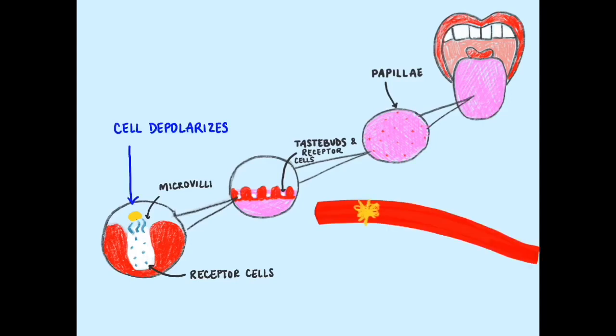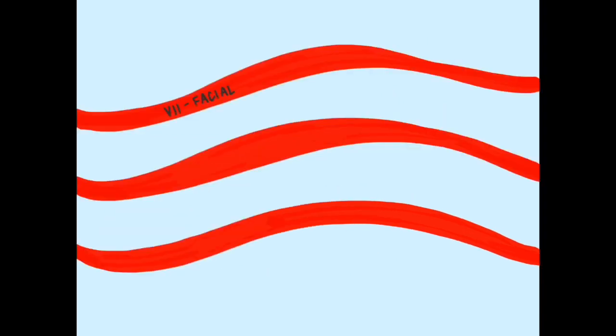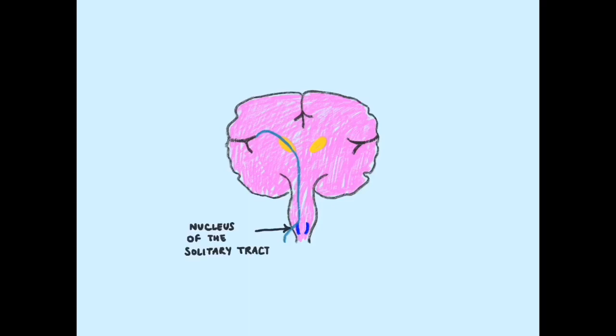Upon depolarization, the cells release neurotransmitters that activate the sensory neurons, which travel through cranial nerves 7, 9, and 10. The sensory neurons terminate on neurons of the solitary tract in the medulla. From here, the taste information is sent to the thalamus. Then, the information is transferred to the cerebral cortex.